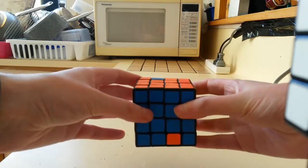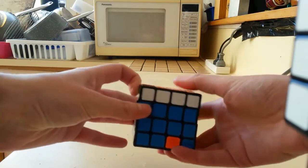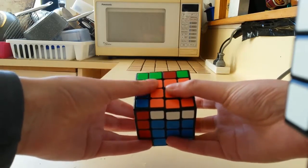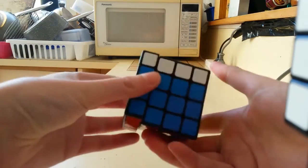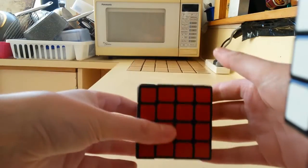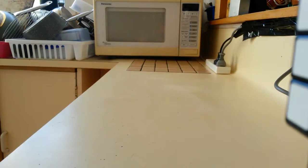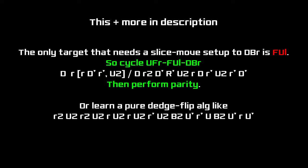When your last target isn't that piece, which is most of the time, just do a short setup, do the algorithm, and undo the setup. This algorithm is not center safe, so you can't do slice move setups. I'll put more about that in the description.